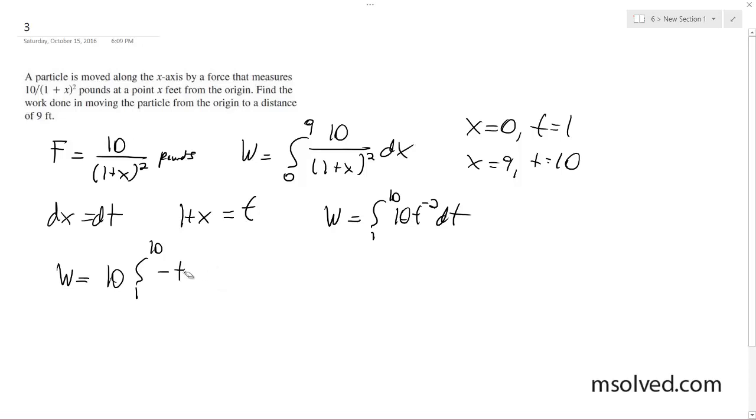Wait, I need to be careful here. I haven't integrated it yet. t to the negative 2 dt. All right, we're getting there. 10 times negative t to the negative 1 from 1 to 10.